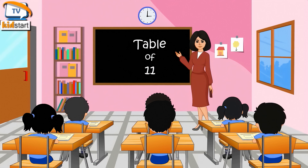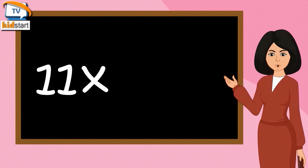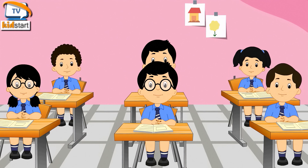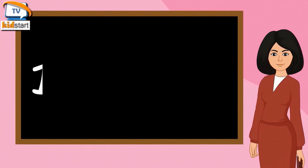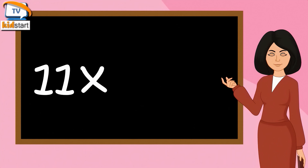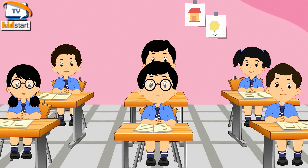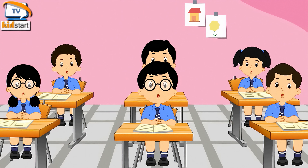Table of Eleven. Eleven sixes are sixty-six. Eleven sevens are seventy-seven. Eleven eights are eighty-eight. Eleven nines are ninety-nine. Eleven tens are one-ten.